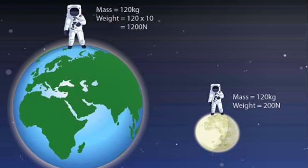Because of that, the weight of the person decreases to 200 Newtons when he is on the moon, but his weight is 1200 Newtons when he is on Earth. That is the difference between mass and weight.